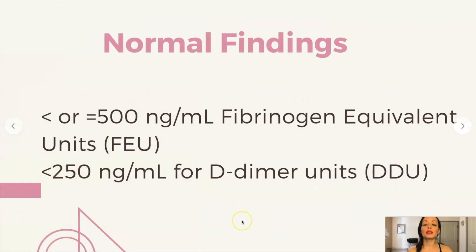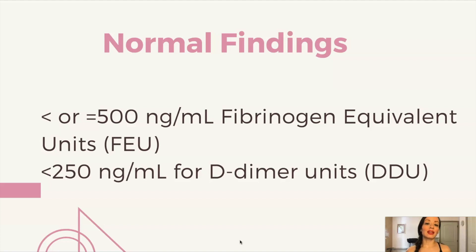Normal findings for D-dimer depend on the units being used. Normal findings will be less than or equal to 500 nanograms per milliliter of fibrinogen equivalent units (FEU), or less than 250 nanograms per milliliter of D-dimer units (DDU).